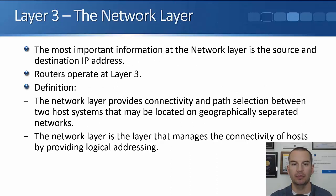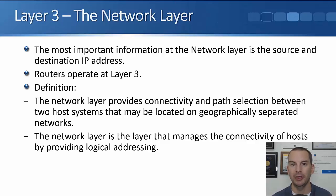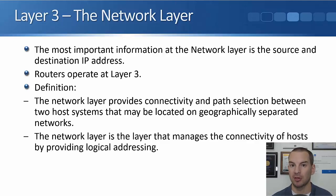The next layer is layer three, the network layer. The most important information at the network layer is the source and destination IP address. There's a lot of other information also carried in the layer three header, but we'll talk about that when we get to that layer section. Routers are layer three devices — they operate at layer three of the OSI model. The definition of the network layer: it provides connectivity and path selection between two host systems that may be located on geographically separated networks. The network layer manages the connectivity of hosts by providing logical addressing. IP addressing is our logical addressing.